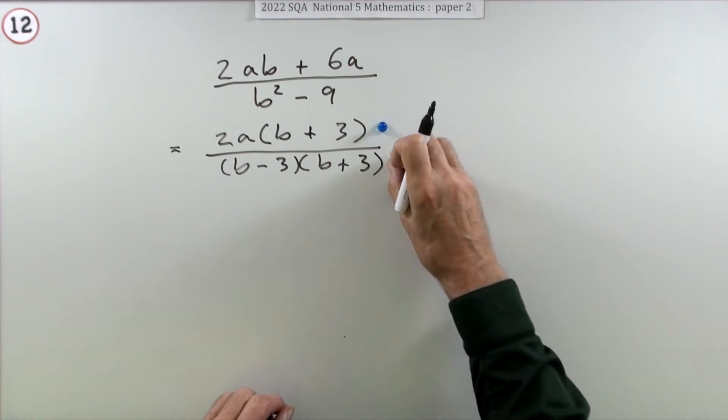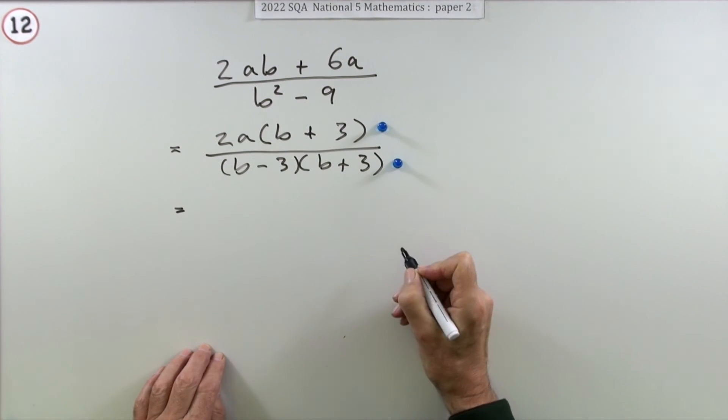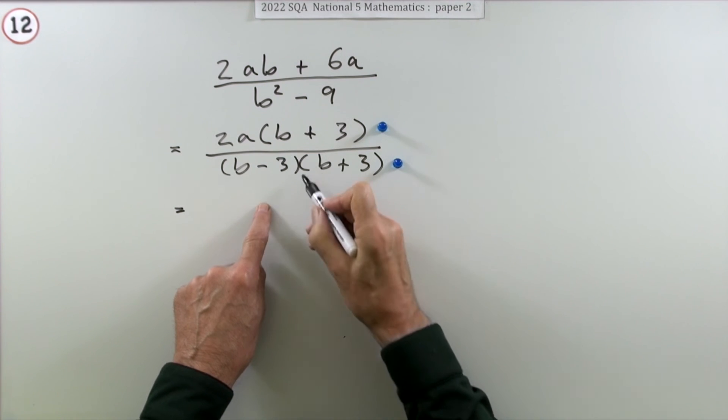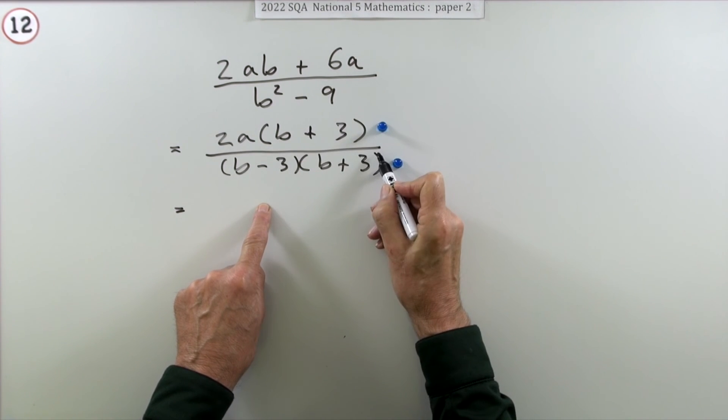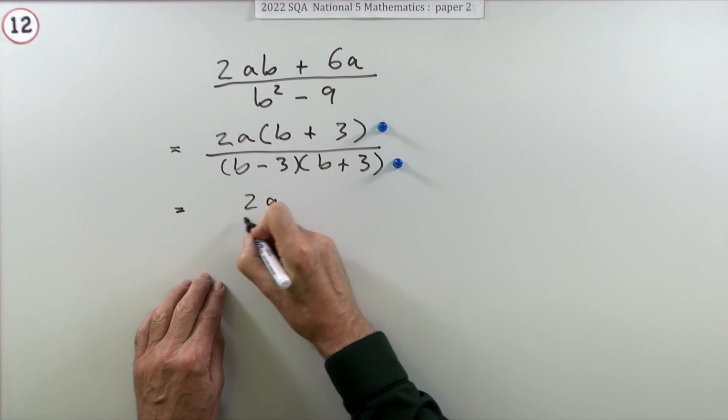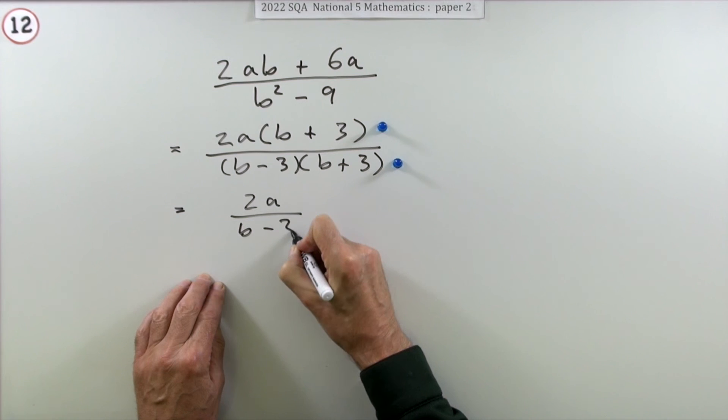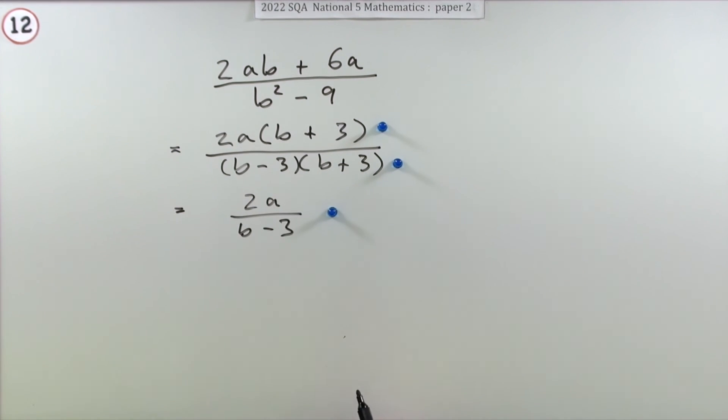And then those two parts can divide out, leaving just 2a on top and b minus 3 underneath for the final mark.